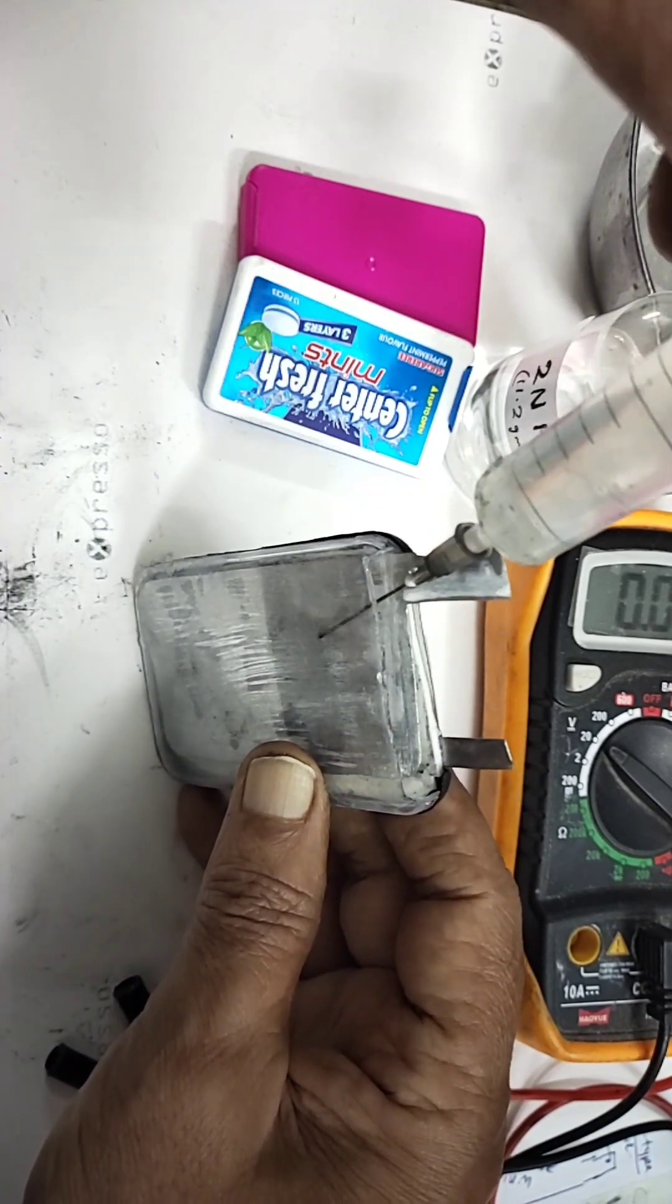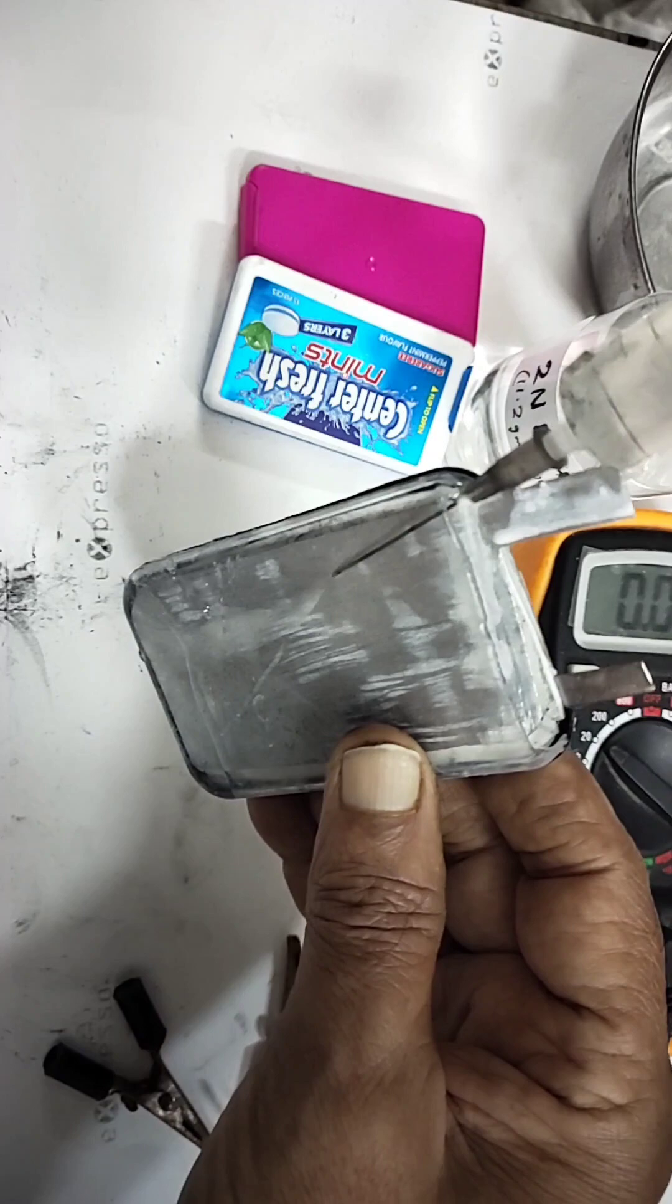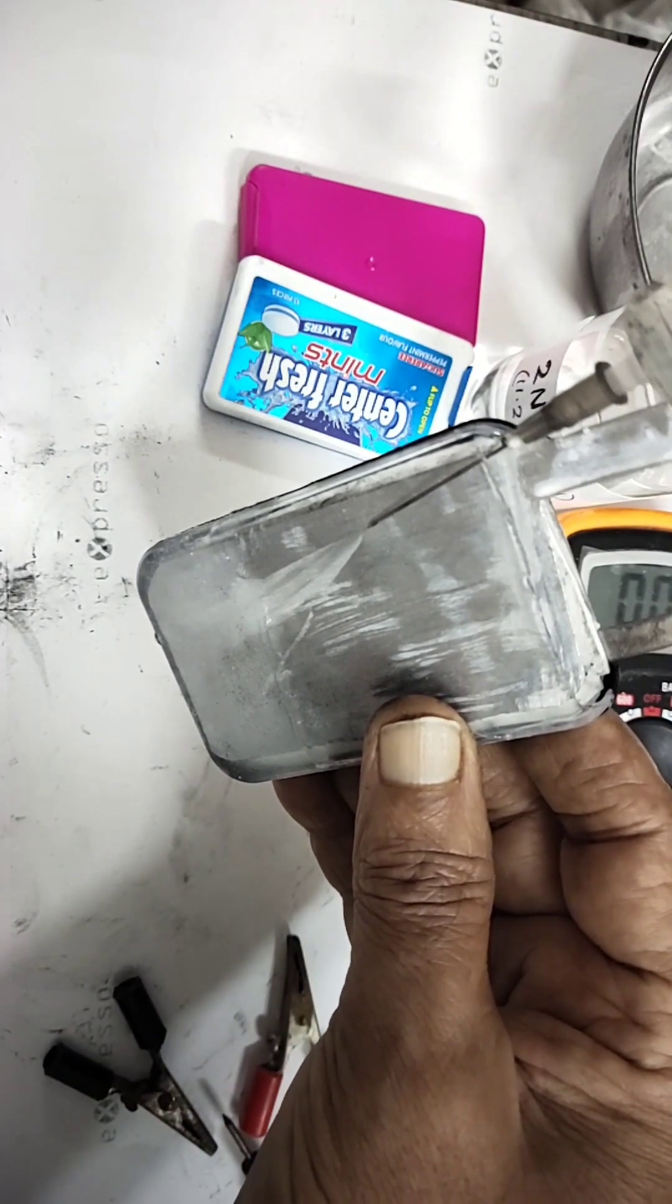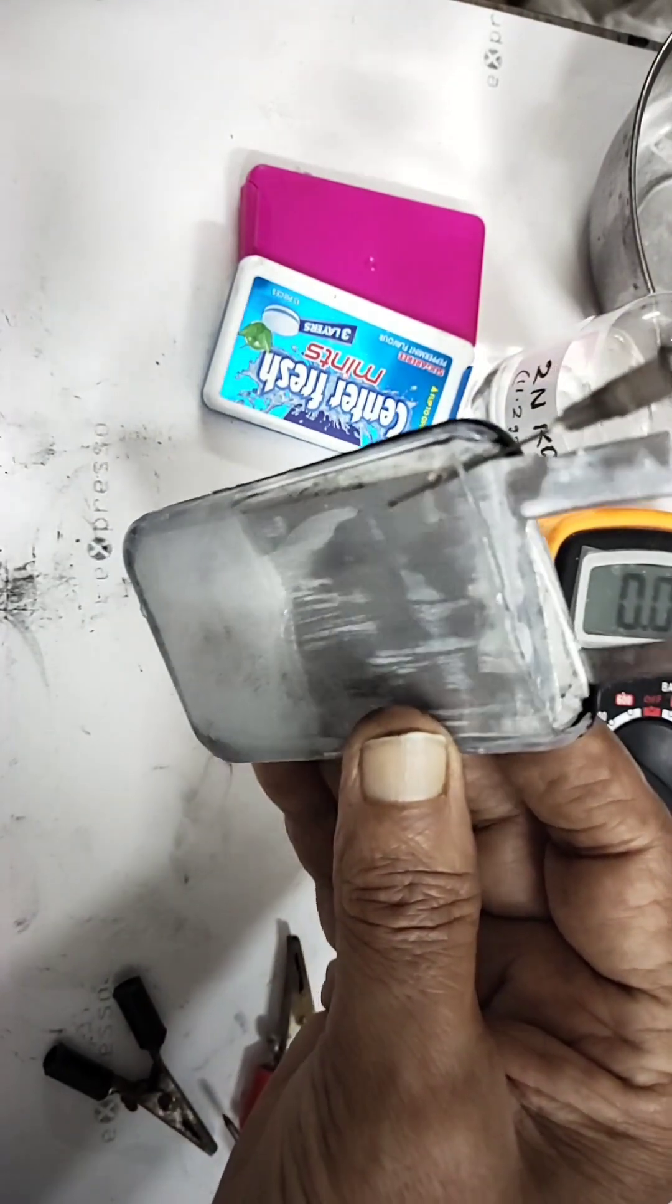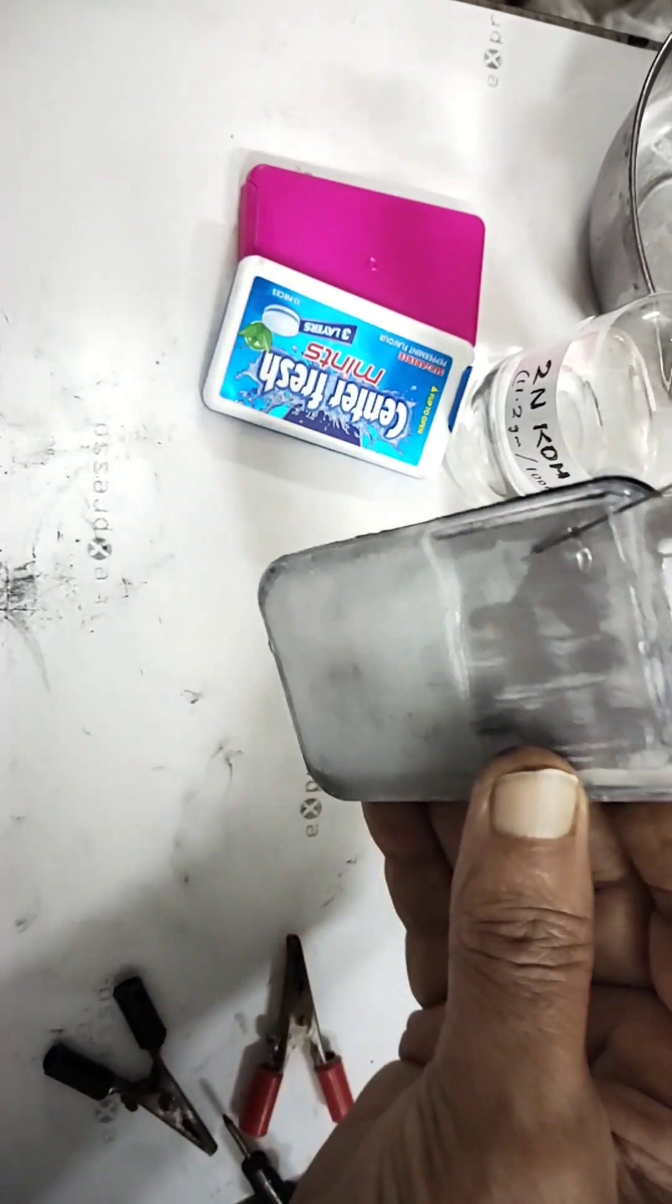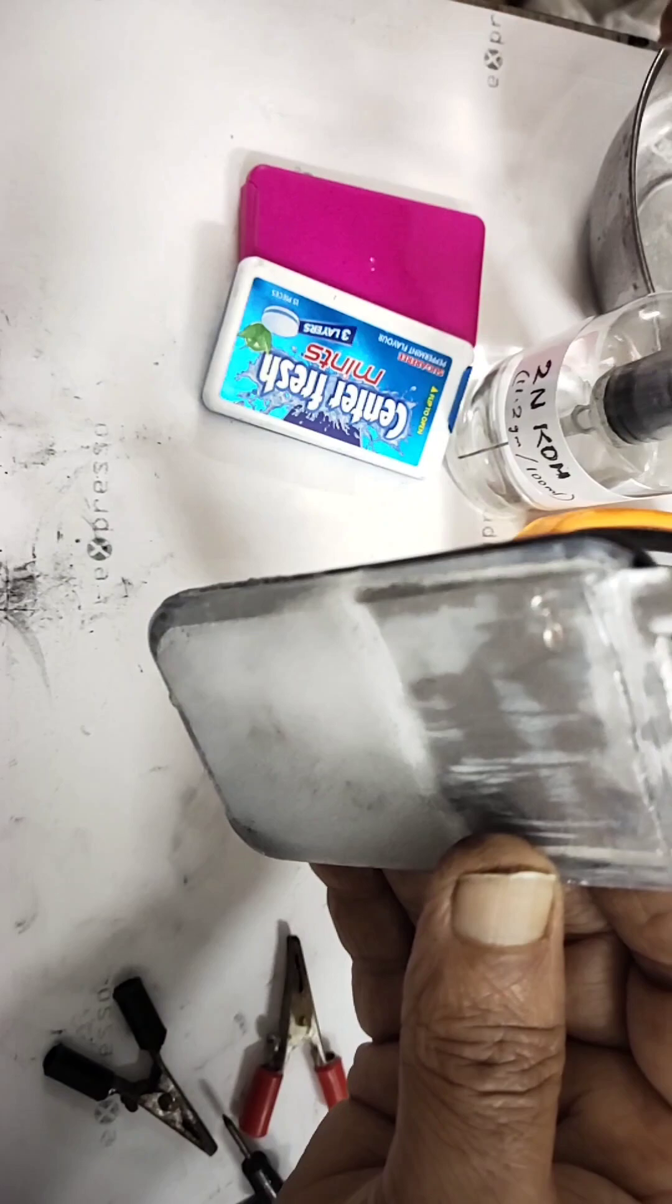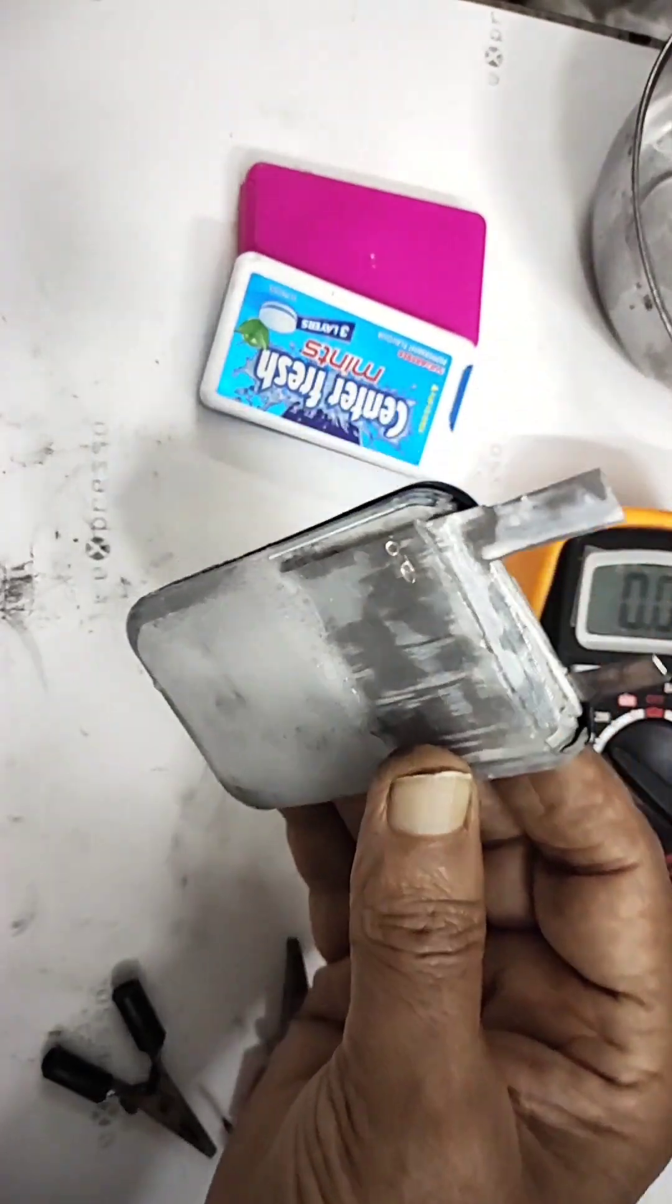I am just pumping inside the electrolyte now. You are able to see there is an increase in volume. Let it be half filled. This is half filled now. We will see what current is generated.